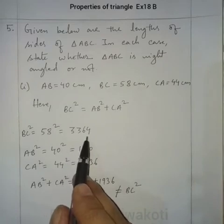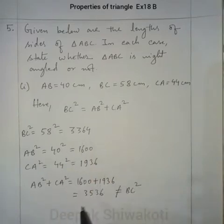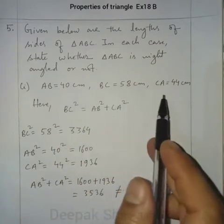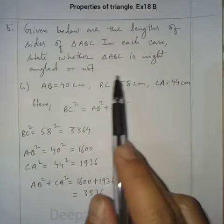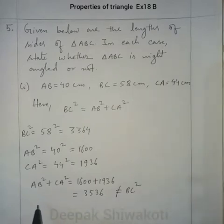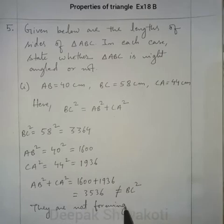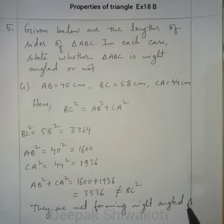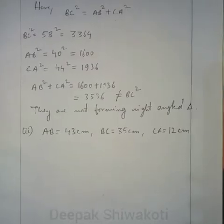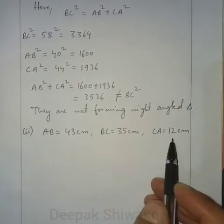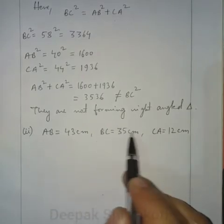3536 is not equal to BC², which is 3364. Therefore, these three sides do not form a right-angled triangle. Moving to the next part, again three sides are given and we have to check whether they form a right-angled triangle or not.